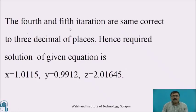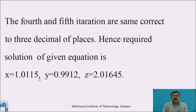The fourth and fifth iterations are correct up to 3 decimal places. Hence, the required solution of the given system of equations is: x = 1.0115, y = 0.9912, z = 2.1645.